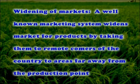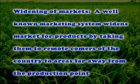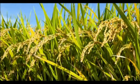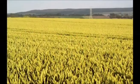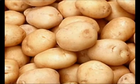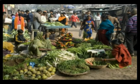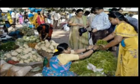Widening of markets: A well-functioning marketing system widens markets for products by taking them to remote corners of the country, to areas far away from the production point. For example, paddy produced in Punjab and Haryana is sold in remote tribal areas. Another example is potato. The widening of markets helps in increasing demand on a continuous basis and thereby guarantees a higher income to the producer.